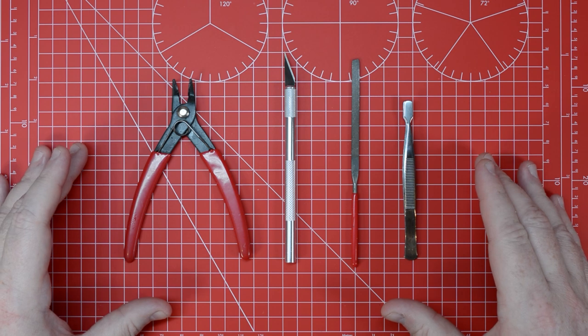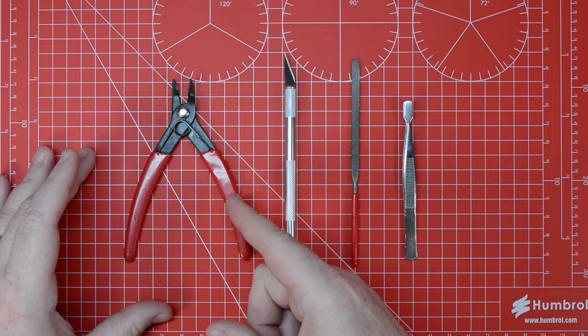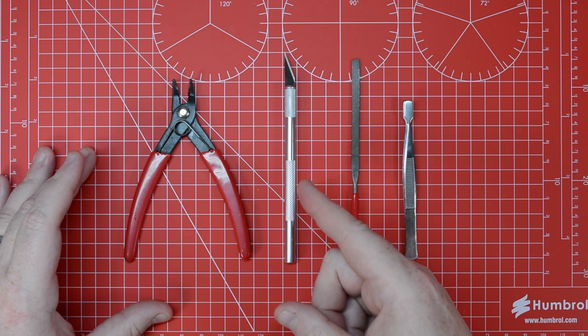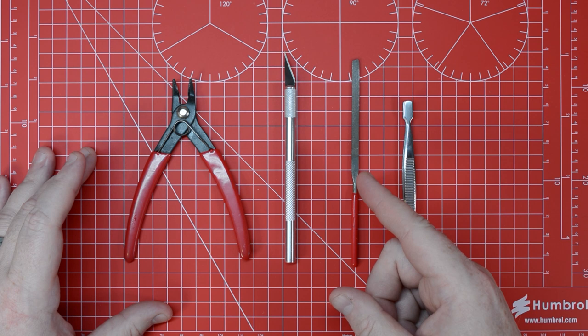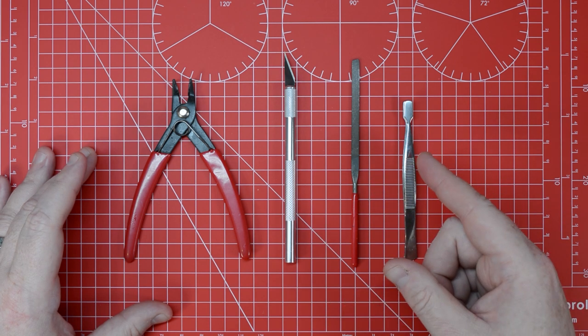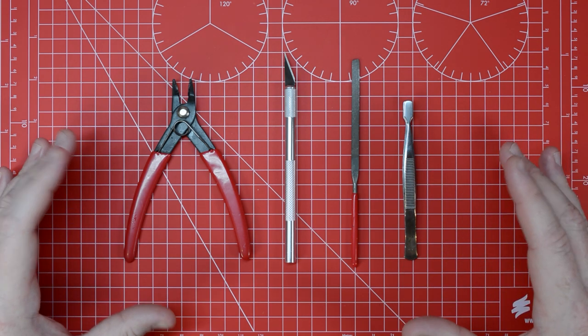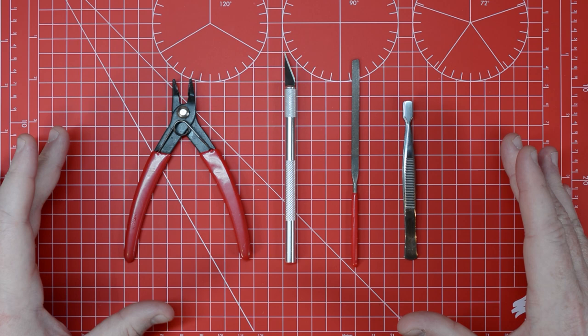The basic toolkit that we'll be using comprises of cutters to remove parts from the frame, a modelling knife to trim away excess plastic, a modelling file to sand the plastic smooth after removal, and tweezers to help when applying the transfers. This is a very basic toolkit well within the reach of even the most novice modellers.